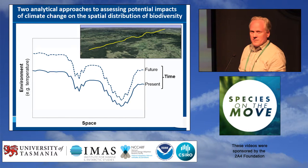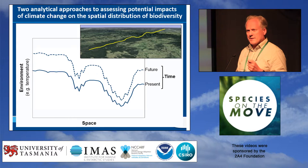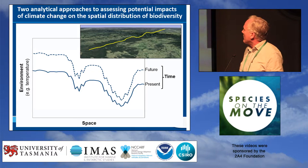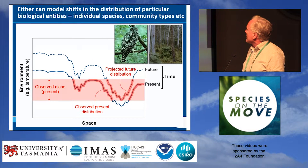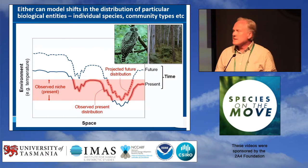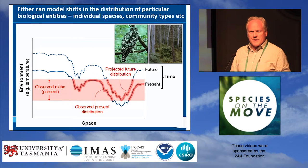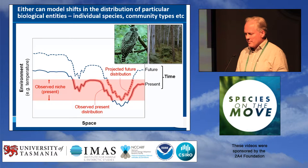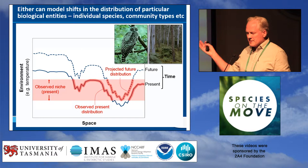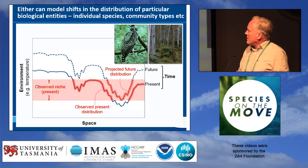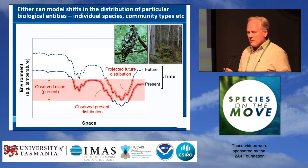If we think of that very simple representation, then it's an easy way to distinguish between two broad approaches that are really dominating the work in this field and that we're hearing a lot about this week. The first of these approaches involves explicitly modelling changes in the distribution of individual biological entities — usually species but also things like community types. This involves essentially using information on the present-day niche of a species or community type to make projections about what might happen to the distribution of that species as the climate changes.